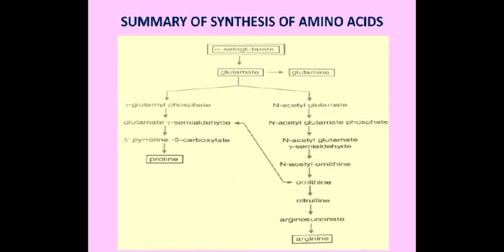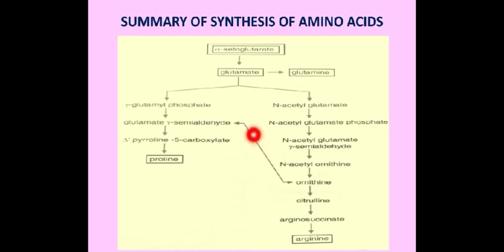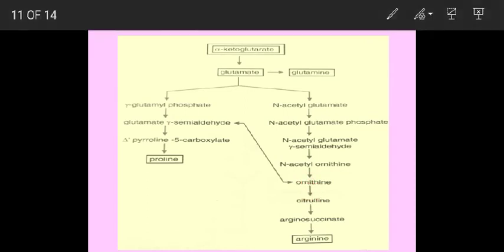Summary of the synthesis of amino acids of the alpha-ketoglutarate precursor family. Four amino acids are synthesized from alpha-ketoglutarate: glutamate, glutamine, proline, and arginine. Glutamate is synthesized from alpha-ketoglutarate, and glutamate then synthesizes glutamine. Glutamate also synthesizes proline via glutamate-gamma-semialdehyde → pyrroline-5-carboxylate → proline. Glutamate-gamma-semialdehyde is also converted to ornithine by delta-ornithine aminotransferase, and ornithine → citrulline → argininosuccinate → arginine.